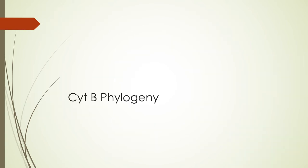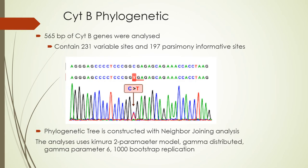This is the cytB phylogenetic analysis. 565 base pairs of cytB gene were used in this analysis. The gene contained 231 variable sites and 197 parsimony informative sites. The phylogenetic tree was constructed with neighbor-joining analysis using the Kimura 2-parameter model with gamma distribution, a gamma parameter of 6, and 1000 bootstrap replications.